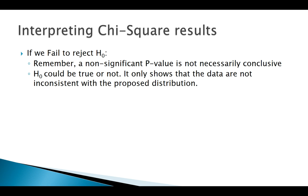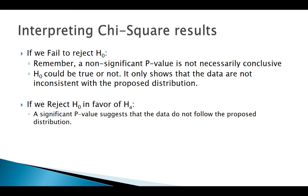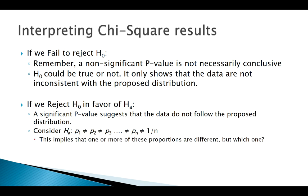But if we do reject the null, we can say that the data does not seem to follow that proposed distribution. Remember what the alternative was: the null was that they're all equal, the alternative is that they're all not equal. Now the question is, which one is not equal? If I have a whole bunch of groups, maybe all of them but one are not equal or something like that.